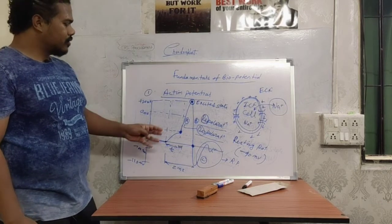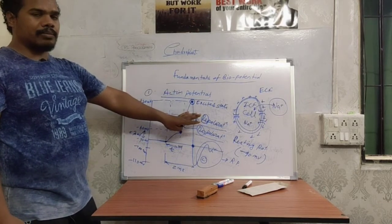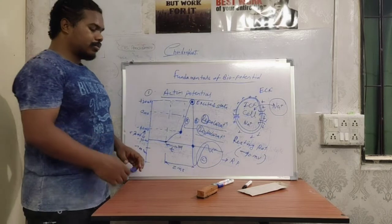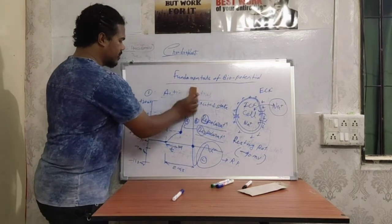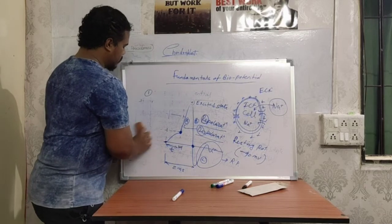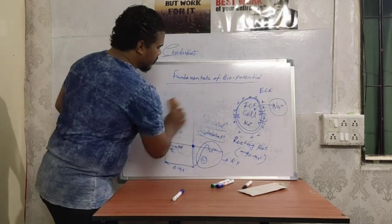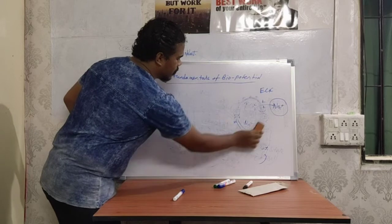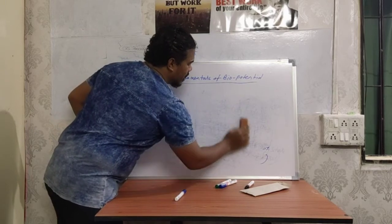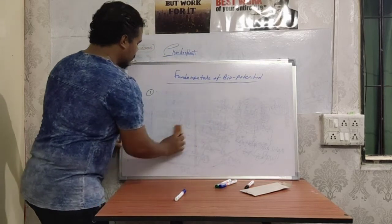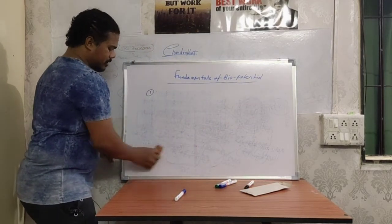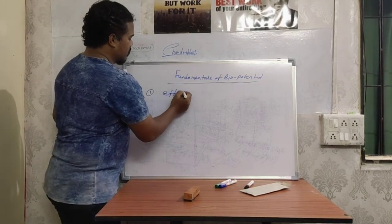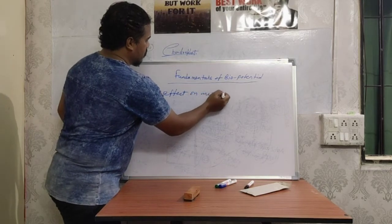So this is the basic of action potential — how we are going to generate action potential. Now coming to our next topic: the effect on muscles. There can be a lengthy explanation of one or two paragraphs of how this biological process takes place, but just a simple explanation and you are done.